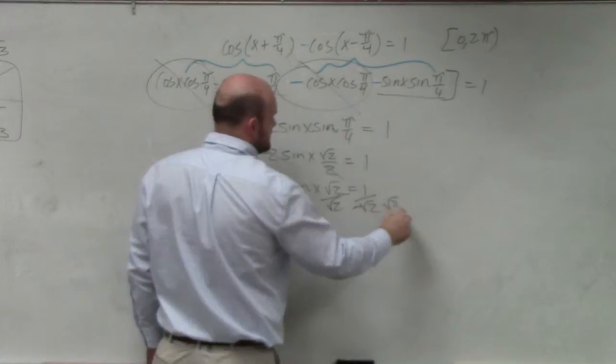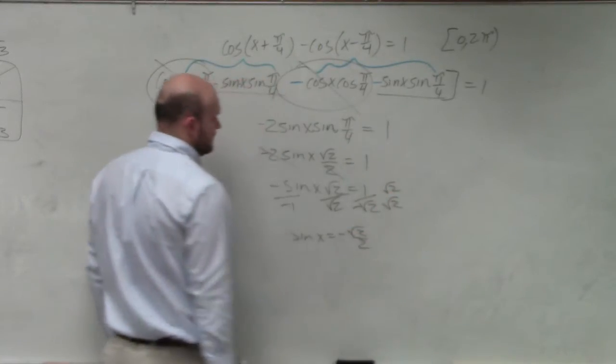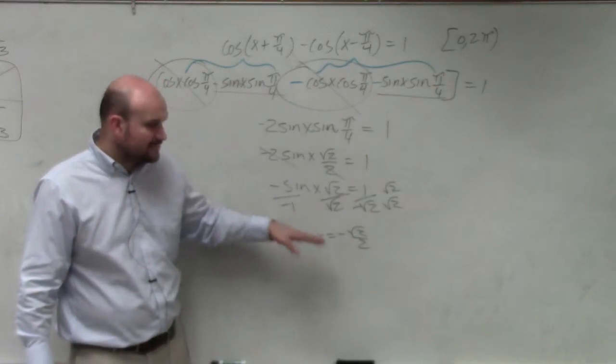And guys, remember, you have to rationalize the denominator. So I've solved it. Sine of x equals negative square root of 2 over 2.